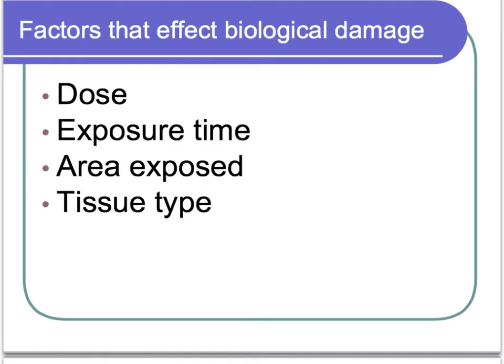When talking about how much damage radiation does to a person, there are a few factors to consider: the dose (how much), the exposure time (how long you were exposed), the area of your body that was exposed, and the type of tissue in your body that was exposed.